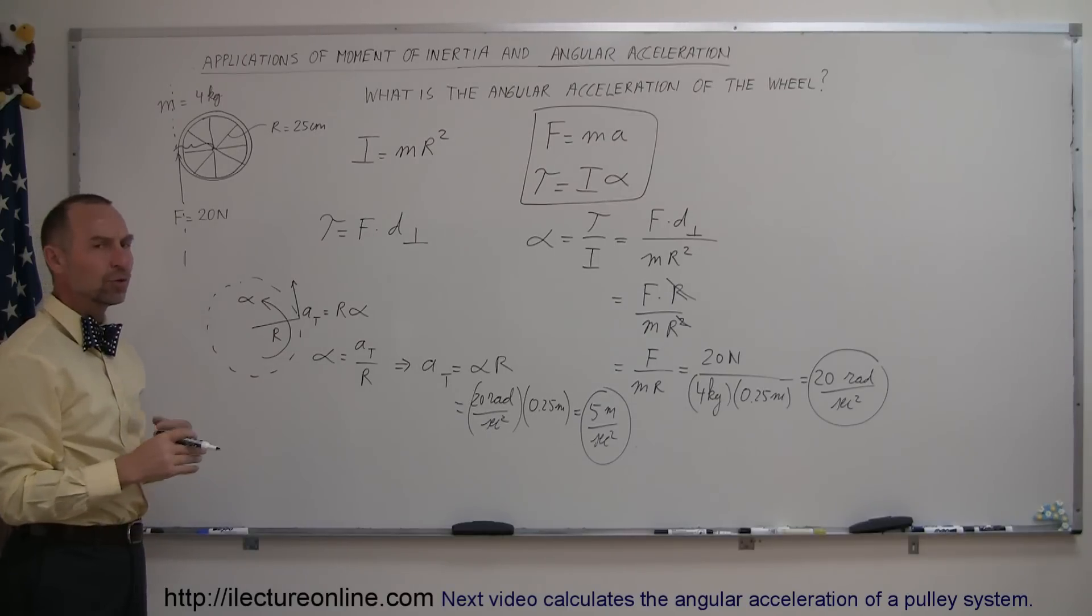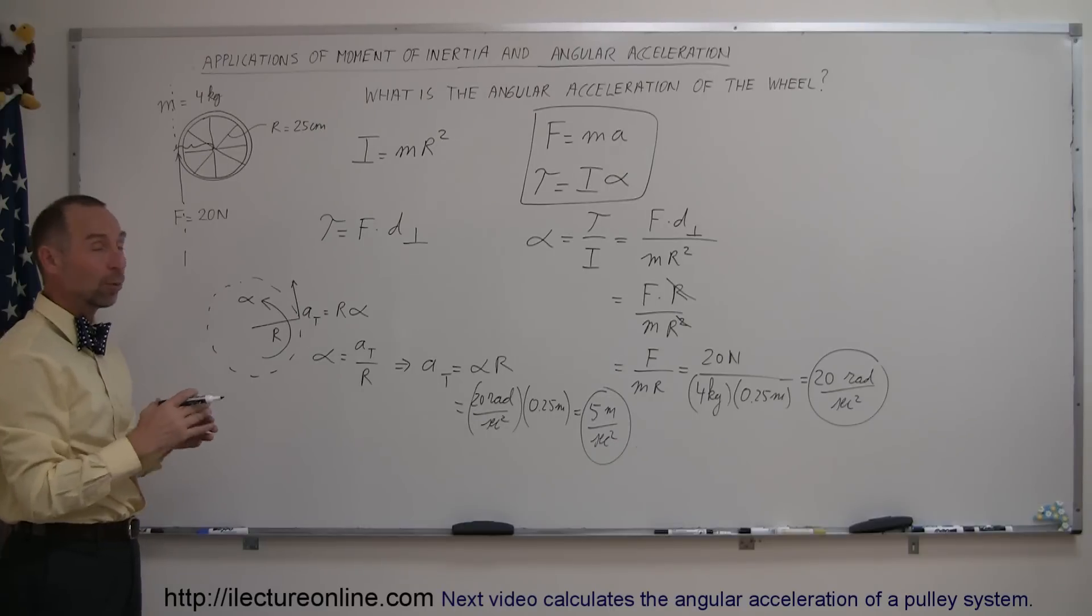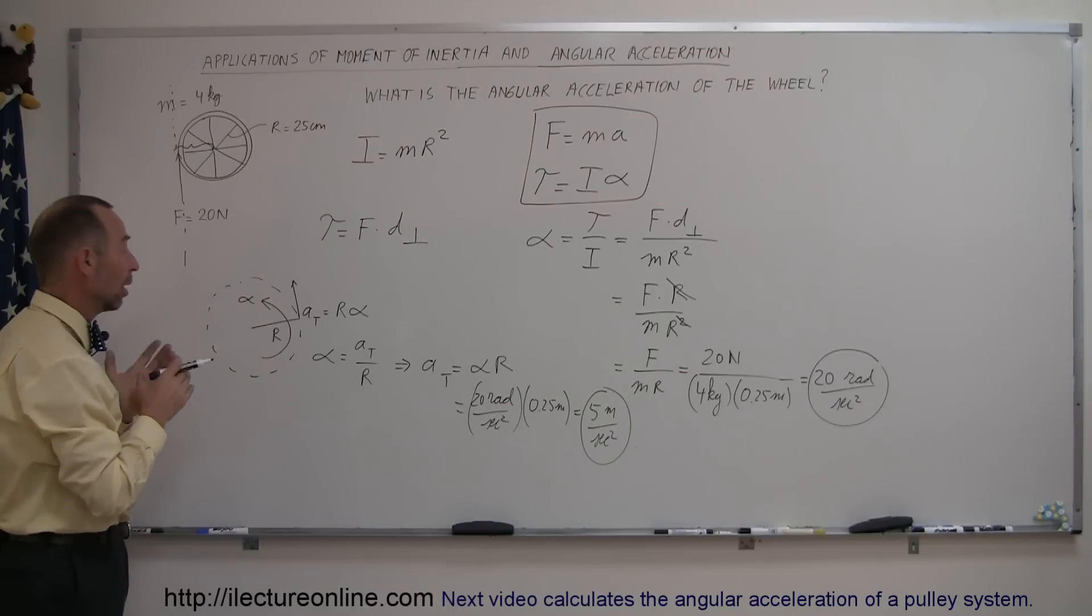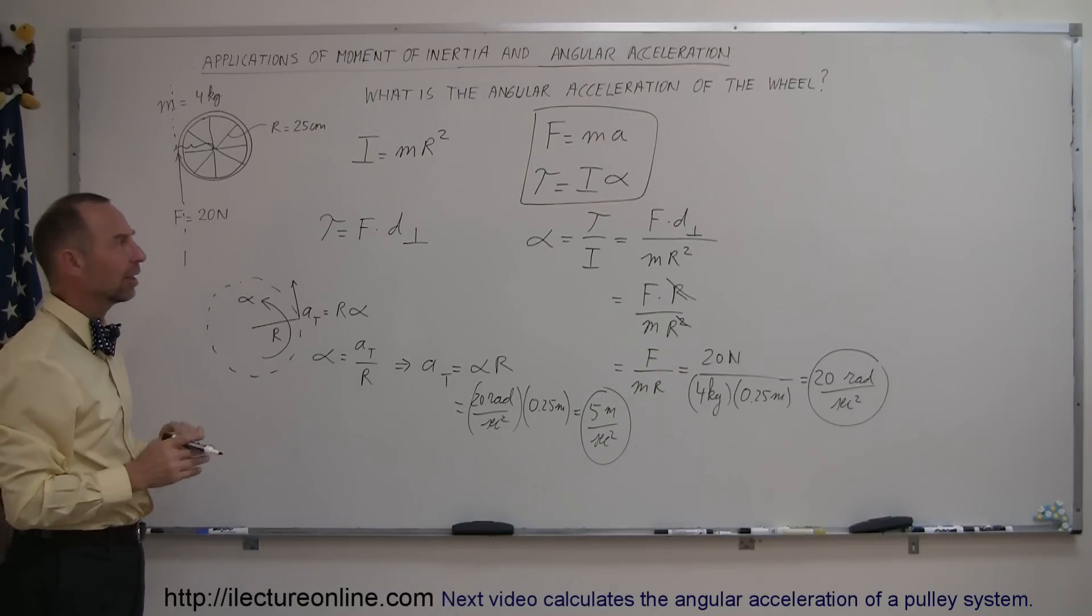Now, the next example, we'll use a pulley, and we'll have to try and find out what the acceleration of a pulley is when we consider that the pulley itself has mass and therefore a moment of inertia. So that's a little bit more tricky, so let's see how the next one is done.